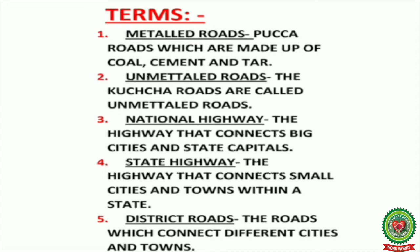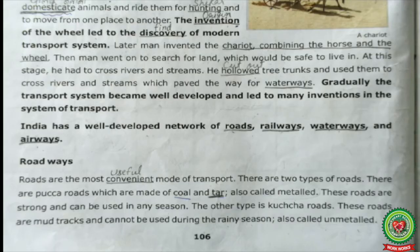Unmetalled roads are kacha roads. The national highway connects big cities and state capitals. The state highway connects small cities and towns within a state. District roads connect different cities and towns. With these terms in mind, let's now learn more about road transport.